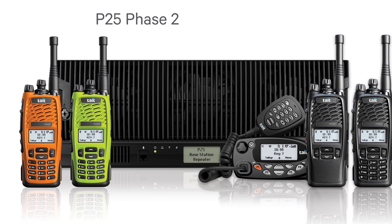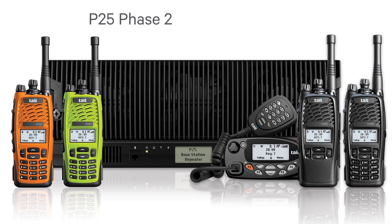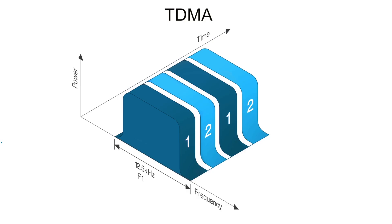P25 Phase 2 uses two time slots. The voice from one talker is converted into digital, but the data is transmitted in only one of the two time slots. At the receiving end, the data is received in that time slot and the original voice is recreated. However, the second time slot, or logical channel, is still free to carry a different conversation. A call from another team can be allocated to the same physical channel but use the second time slot. The ability of each physical channel to be split into two logical channels doubles the capacity of the radio system.